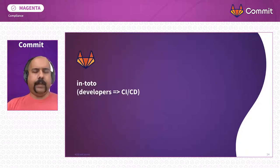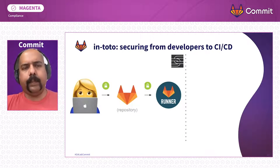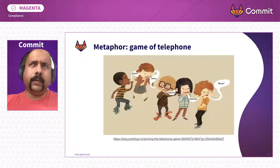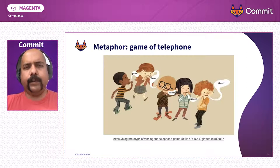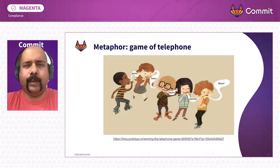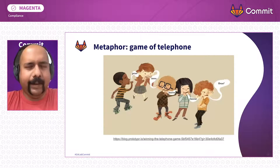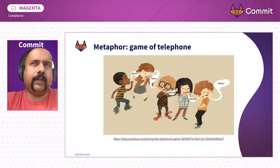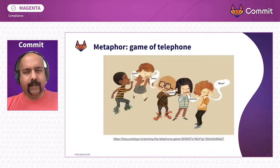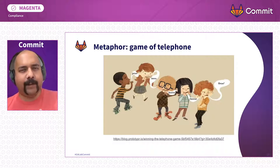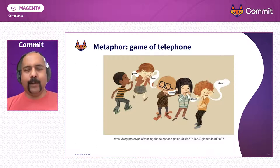Let's talk about the first piece of the puzzle: In-toto, which solves the problem of detecting attacks anywhere between the developers and CI/CD. The problem In-toto solves is like the children's game of telephone — imagine transmitting source code all the way to your end users, and attackers got in between and tampered with the messages. In-toto tries to guarantee the authenticity and integrity of these messages. The first kid says 'peas,' but due to noise — which you can think of as attacks — 'fleas' gets delivered to your end users, which is a bad idea when you wanted to deliver peas.